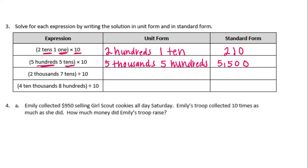Two thousands and seven tens, now divided by ten — we're making it one place value smaller. One place value smaller than thousands is hundreds, and one place value smaller than tens is ones. So we have two hundreds and seven ones, or two hundred seven.